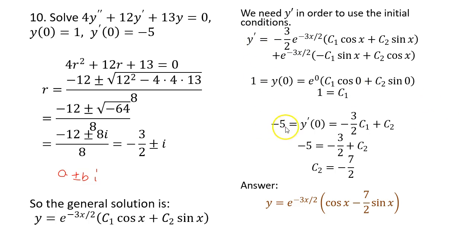And then we plug in negative 5 equal to y prime of 0. That means we replace all the x's here by 0. But once again, cosine 0 is 1, whereas sine 0 is 0. So these two disappear, whereas these two survive. e to 0 is 1. So you have negative 3 over 2 times c1 in the first parenthesis, and this second parenthesis here, you get c2 as a survivor, c2 times 1. Now since c1 is 1, you can plug this in here and solve for c2 and get c2 as negative 7 over 2.